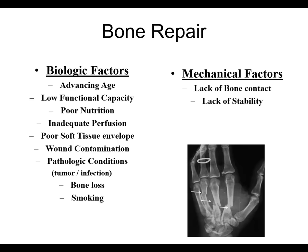For bone repair, you really have to have a host of things take place. There are biologic factors that can affect the success or failure of bone repair in addition to mechanical factors. Biologic factors include advancing age, low functional capacity, poor nutrition, inadequate perfusion, poor soft tissue envelope, wound contamination, tumor infection, and smoking — these all adversely affect bone healing. Mechanical factors that can adversely affect bone healing include lack of bone contact and complete lack of stability, which could also prevent a fracture from healing.